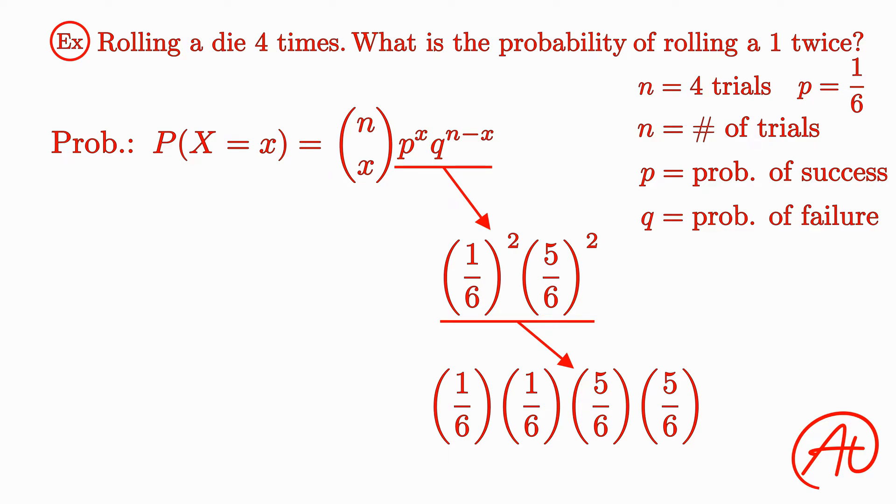Well, since each of our 4 trials are independent, to find the probability of a certain situation occurring, we can multiply together the probabilities of the outcomes for each trial. So in this order, we would specifically be finding the probability of getting a success, aka rolling a 1 on the first roll, a success on the second roll, a failure on the third roll, and then finally a failure on the fourth roll. So essentially, this right side is a way to calculate the probability of one specific situation that satisfies our desired outcome of rolling a 1 twice.